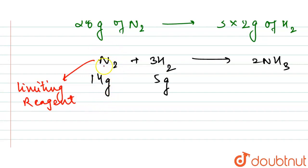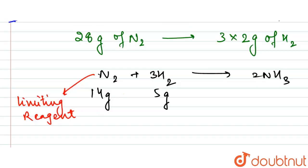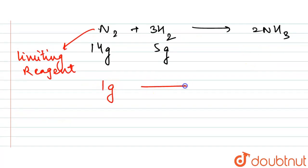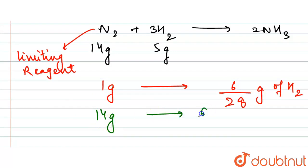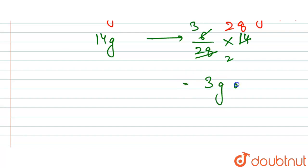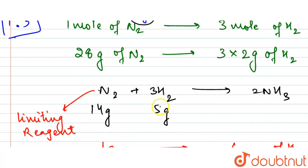For 28 grams of N₂, we require 6 grams of H₂. So for 1 gram of N₂, we require 6/28 grams of H₂. Therefore, for 14 grams of N₂, we require (6/28)×14 = 3 grams of H₂.